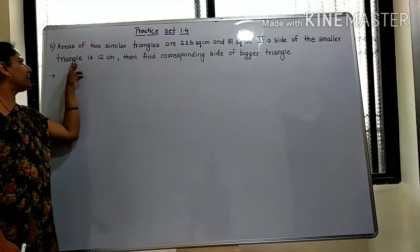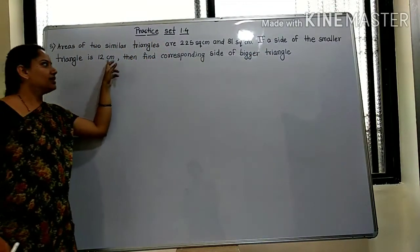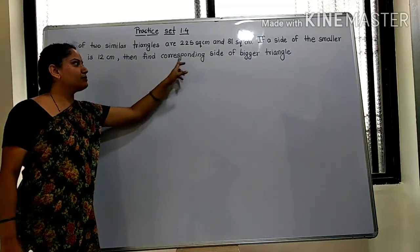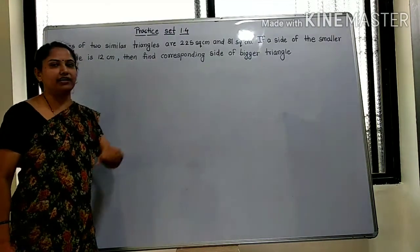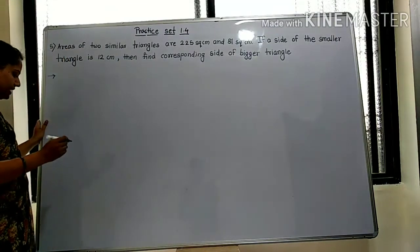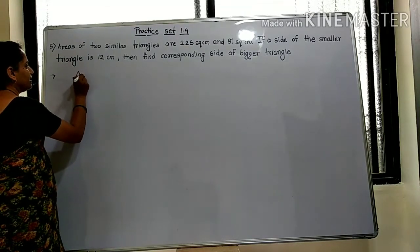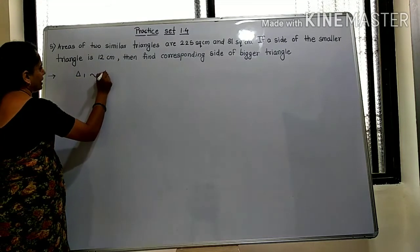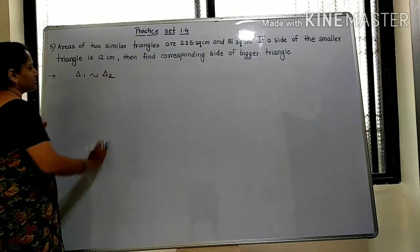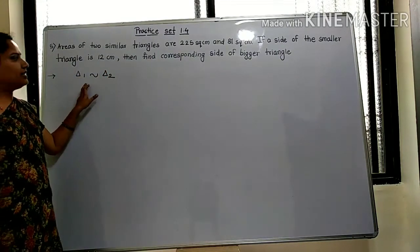of the smaller triangle is 12 centimeters, then find the corresponding side of the bigger triangle. So we have two triangles here. Let's call them Triangle 1 and Triangle 2. Triangle 1 is similar to